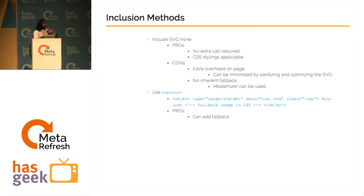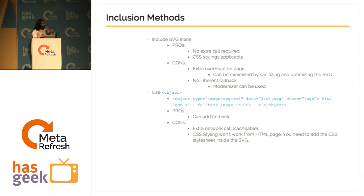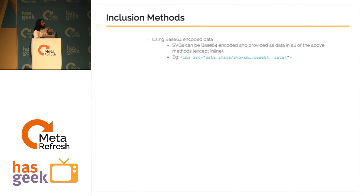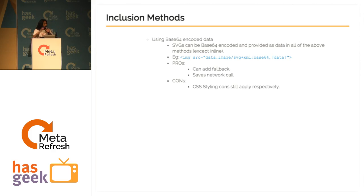The fourth method is using the object tag — you can refer to the SVG inside the object tag. The pros are that you can add a fallback; the cons are a network call (which is cacheable) and that CSS styling won't work from the HTML page, but if you have a CSS stylesheet inside the SVG, the object tag will acknowledge it. The fifth method is base64 encoding your SVG data and including it in any of the previous four methods except inline. Personally, I always use inline.